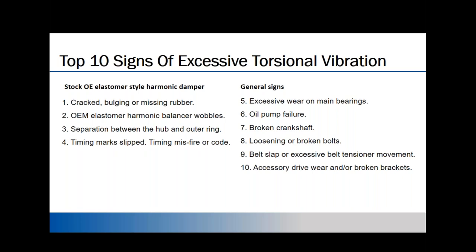Additional signs of vibration damper problems include excessive main bearing wear, oil pump failure — especially powdered metal pump gears on shorter-stroke engines like V6s or four-cylinders — and broken crankshafts, particularly in unusual locations like the first crank pin. You may also see flywheel bolts backing out, belt flap, thrown belts, or broken accessory brackets. These are all indicators that your vibration damper isn't doing its job properly.